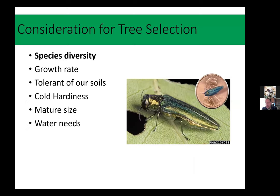I'm going to start with some things to think about when you're picking a tree. I spend a lot of time talking about species in longer talks, but today I'll just give you some things to consider and point you toward good lists. The first big-picture thing to consider when selecting trees is to give thought to planting a diversity of tree species, varieties, and even families — a broader classification.